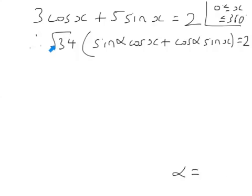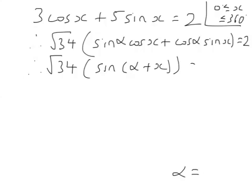So I can now solve this equation here. And I can do that by simplifying what's inside the bracket, because what's inside the bracket is sin of alpha plus x, because that is the compound angle formula. Sin of alpha plus x is sin alpha cos x plus cos alpha sin x, which is what we've got here.